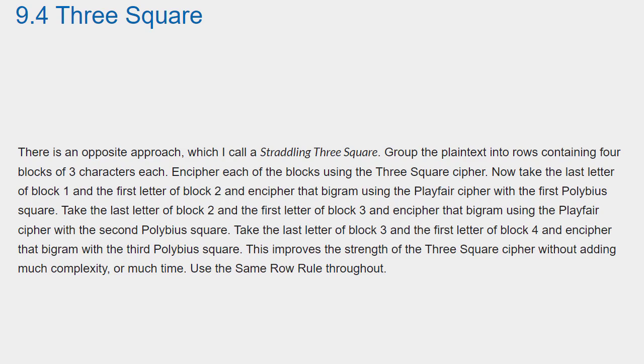Take the last letter of block 2 and the first letter of block 3 and encipher that bigram using the Playfair cipher with the second Polybius square. Take the last letter of block 3 and the first letter of block 4 and encipher that bigram with the third Polybius square. This improves the strength of the Three Square cipher without adding much complexity or much time. Use the same row rule throughout.